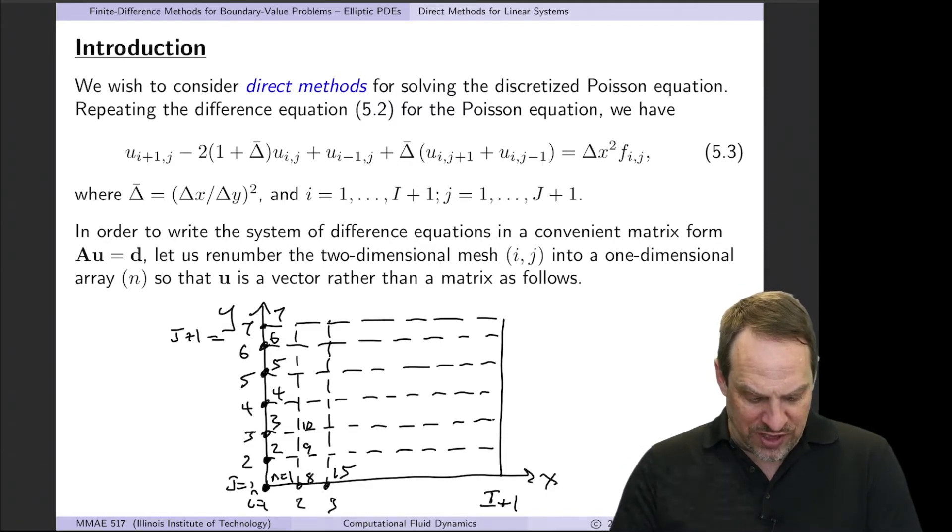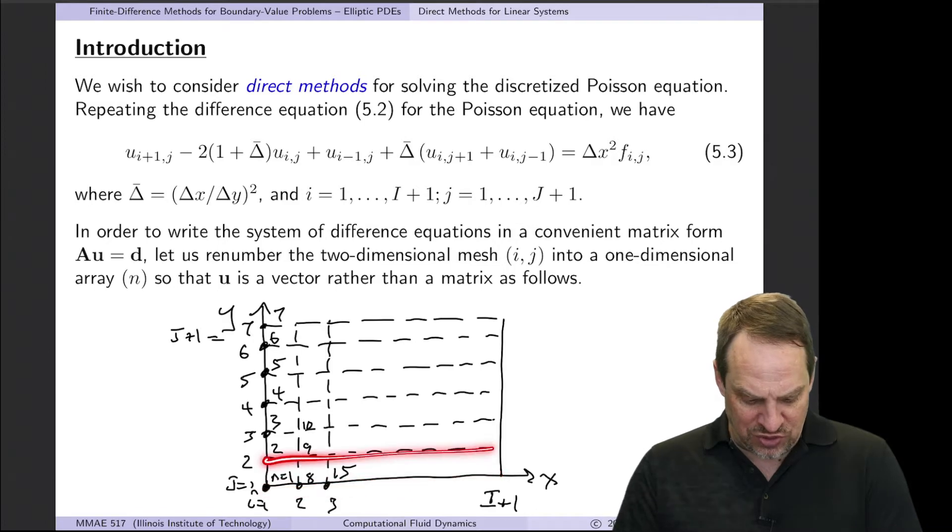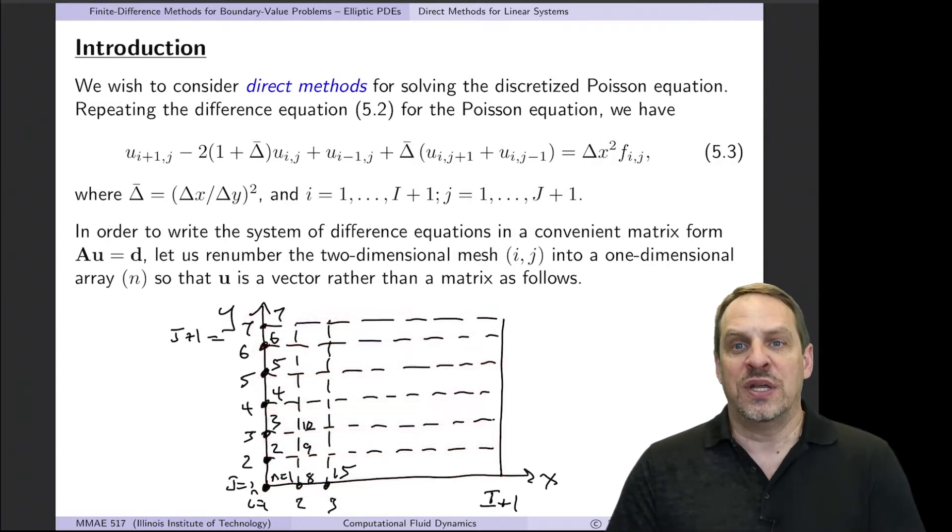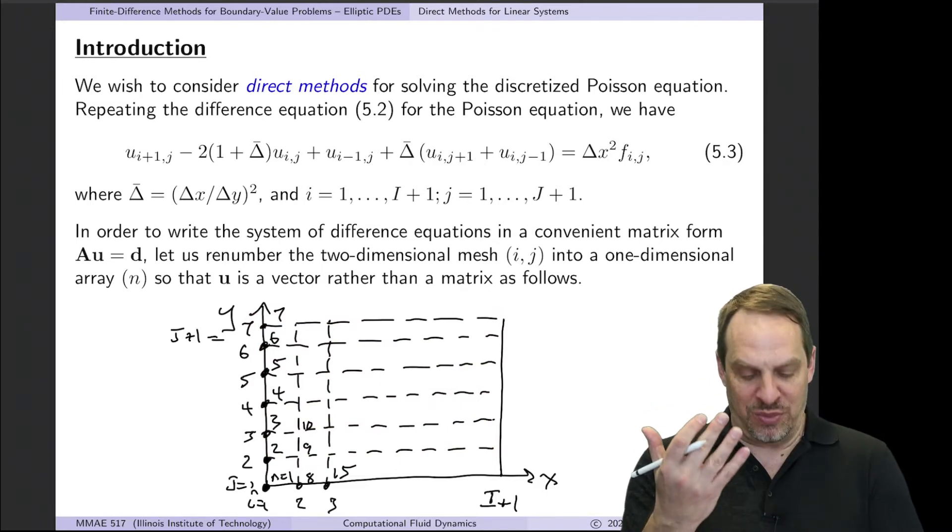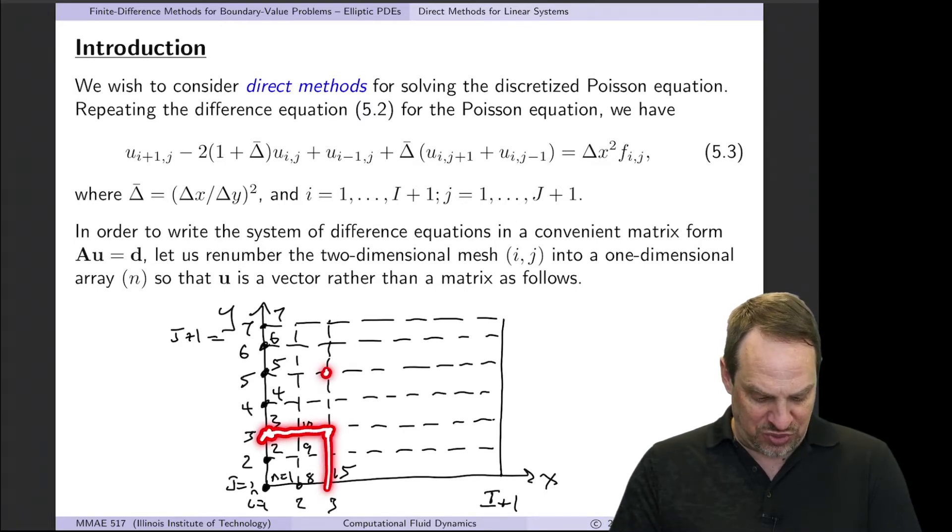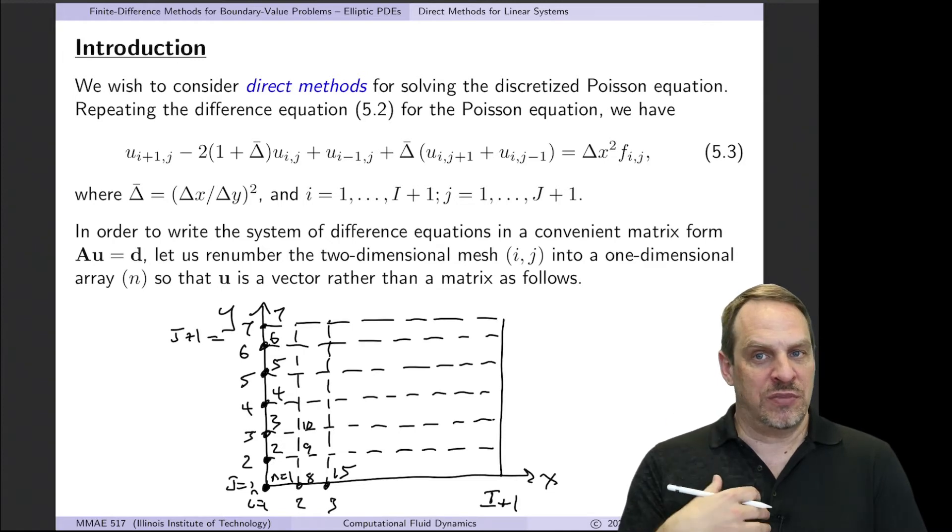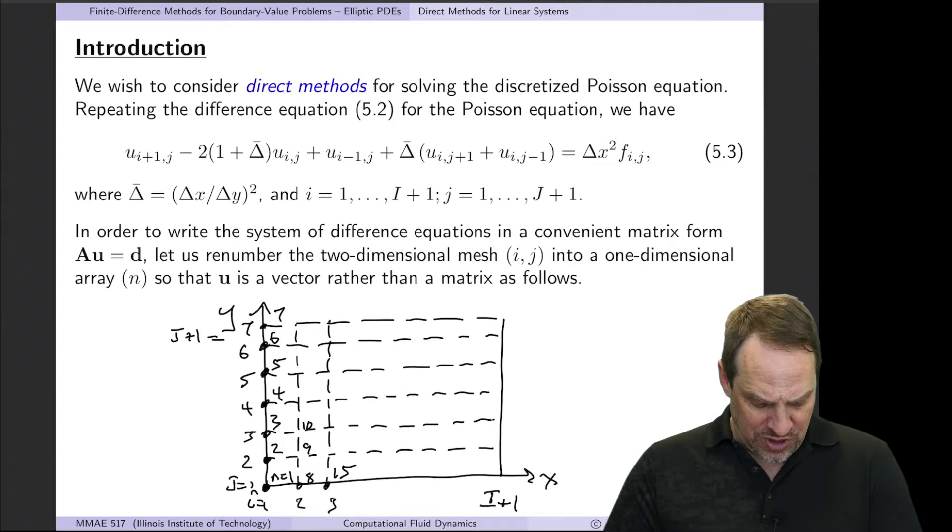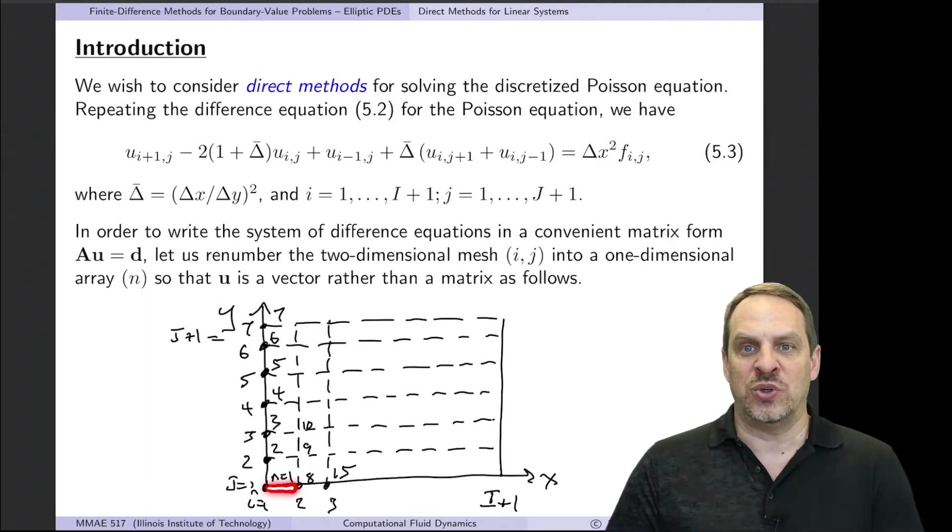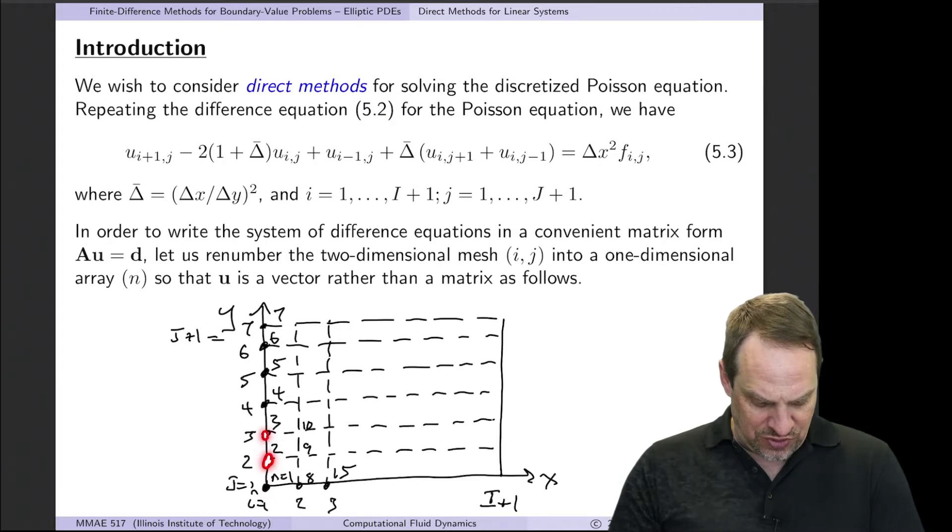This is what we had last time, with i equals 1 being the left boundary, then 2, and 3, and capital I plus 1 being the right boundary. j equals 1 is the lower, and 2, 3, 4, 5, 6, in this case I have 7, and 7 is capital J plus 1, the upper boundary. Every point in the grid where these grid lines intersect has an i and a j. This point right here is i equals 3 and j equals 3. This point is i equals 3, j equals 5. All we're going to do is map these to a single index. This is not unique, there's different ways to do this. I'm going to start in the lower left-hand corner and call that n equals 1, and then I'm going to go up. So this is n equals 1, then n equals 2, 3, 4, 5, 6, 7. When I get to the top, I drop back down on the next column.